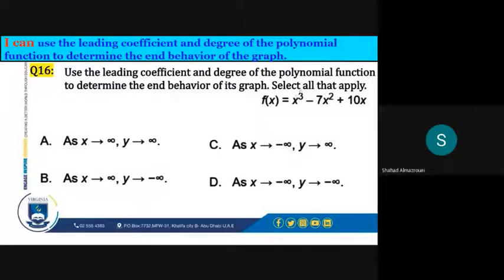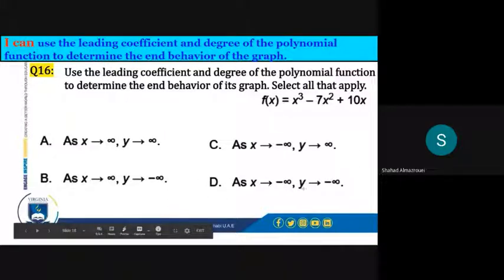The degree of this leading term is 3 which is odd. That means that the function will be on opposite sides. So it's D: as x approaches negative infinity, y approaches negative infinity.